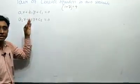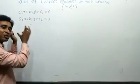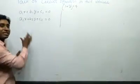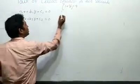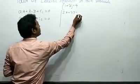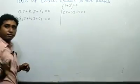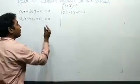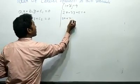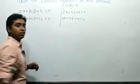We have coefficients a₁, a₂, b₁, b₂ for x and y. For example, suppose we take 2x + 3y + 5 = 0.